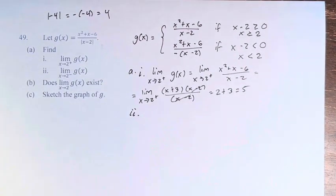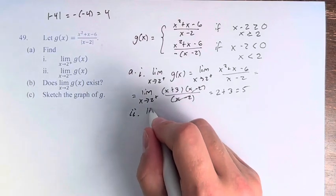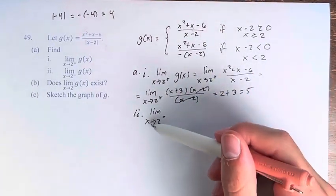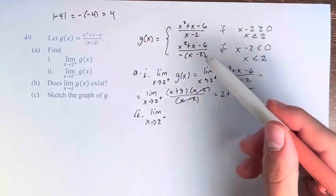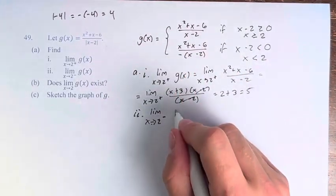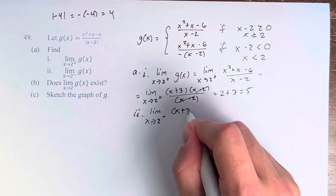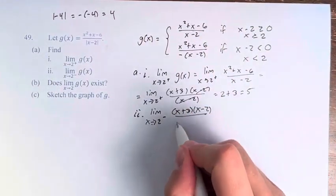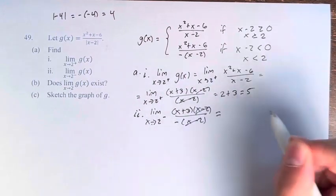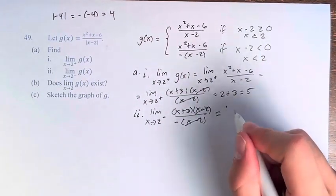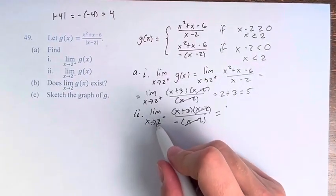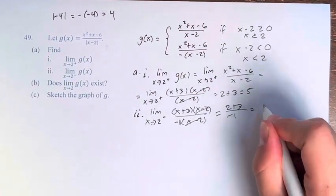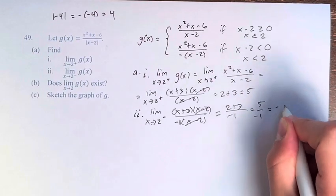In part 2, we have the limit as x approaches 2 from the left. This means its value is less than 2, which means we're using this one. So we have, and I'll just factor it directly, x plus 3 times x minus 2, because the numerator doesn't change, over negative x minus 2. These cancel, and we're left with x plus 3. Plugging in directly, 2 plus 3 divided by negative 1 is 5 over negative 1, which is negative 5.